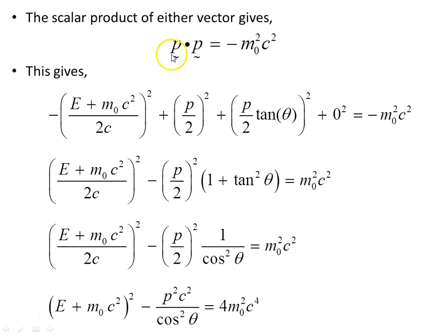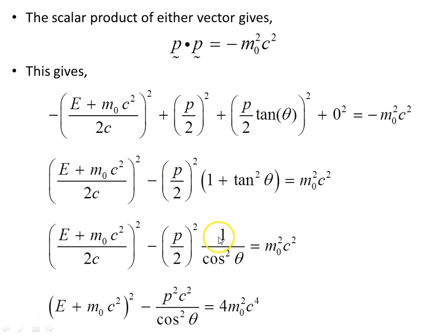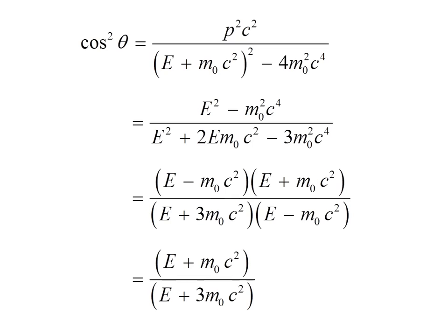The scalar product of either final momentum vector gives p·p = −m₀²c². Expanding the components — squaring each term and summing — and multiplying through by minus 1 gives an expression. Factoring out (p/2)² and using the trigonometric identity 1 + tan²θ = sec²θ = 1/cos²θ, then multiplying through by 4c², we obtain a simplified expression for cos²θ.